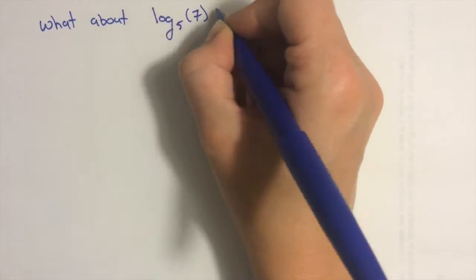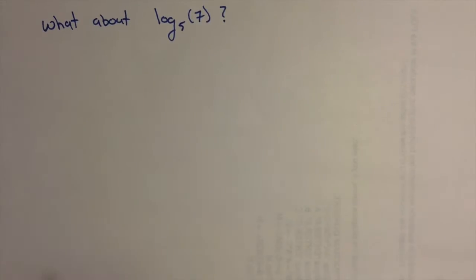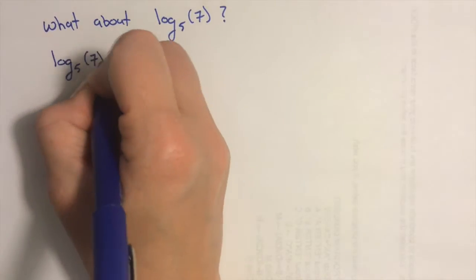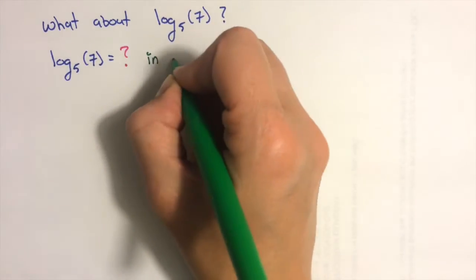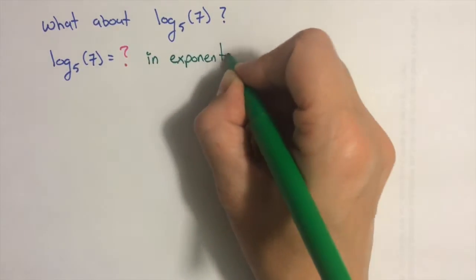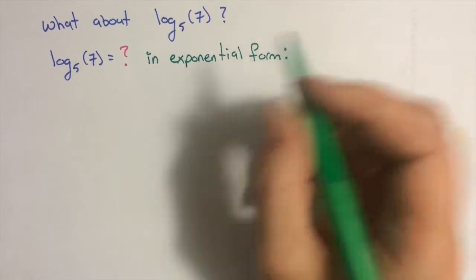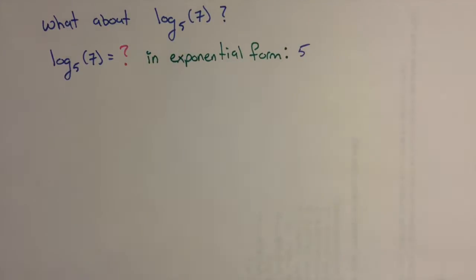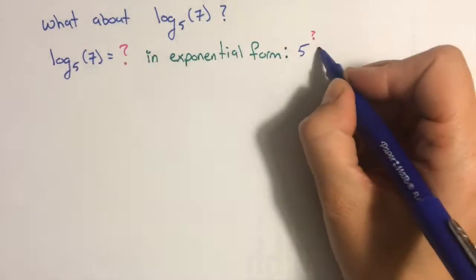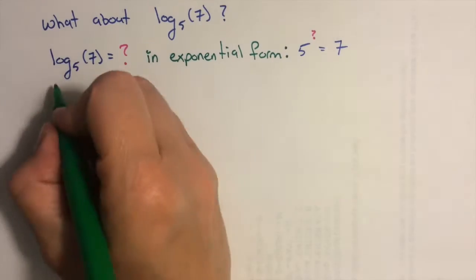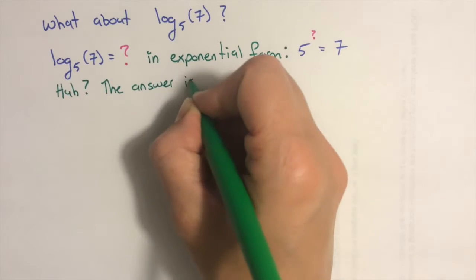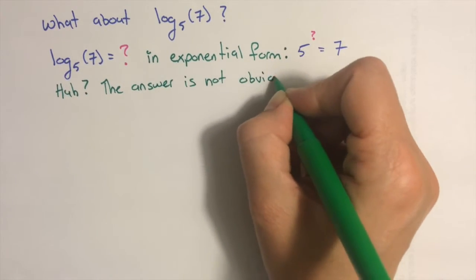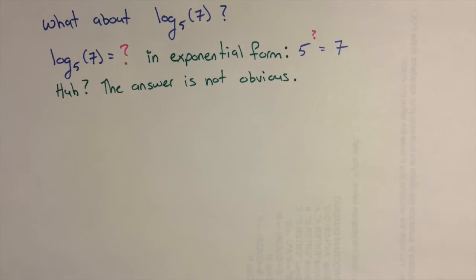But what about something like log base 5 of 7? I'll start out the same way: log base 5 of 7 equals what, and then write that in exponential form: 5 to the what equals 7. Unfortunately, this is not at all obvious. I don't know what power of 5 is 7, so how am I going to figure this out?